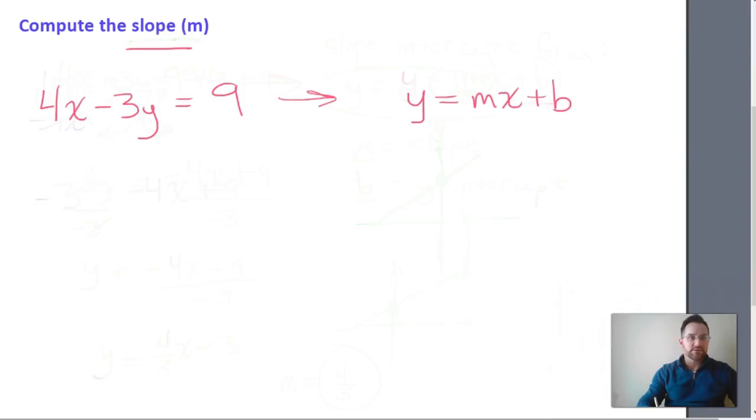Or you can see right here, m is the coefficient of x. And it's also the slope we're after. b is what's called the y-intercept.